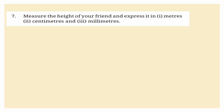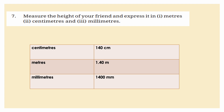Measure the height of your friend and express it in meters, centimeters, and millimeters. For example, if the height is 140 centimeters: to convert to meters, divide by 100 — 140 ÷ 100 = 1.40 meters. To convert centimeters to millimeters, multiply by 10 — 140 × 10 = 1,400 millimeters.